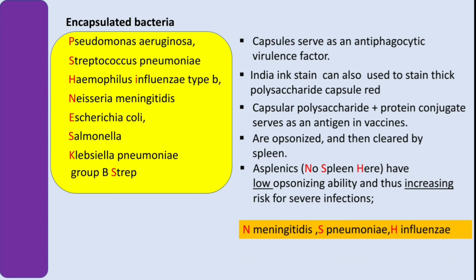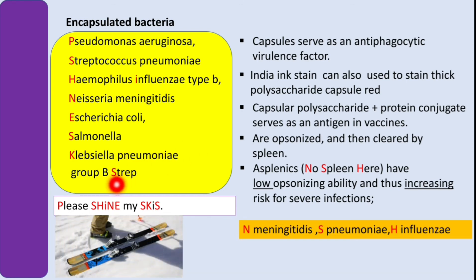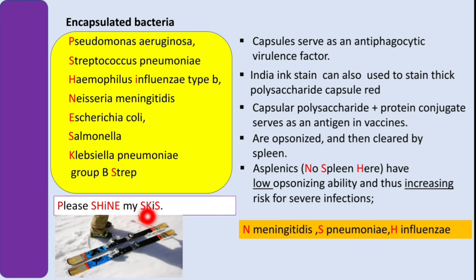The mnemonic 'Please shine my skis' helps you remember all the encapsulated bacteria: P for Pseudomonas aeruginosa, S for Streptococcus pneumoniae, H for Haemophilus influenzae, N for Neisseria meningitidis, E for E. coli, S for Salmonella, K for Klebsiella, and S for Group B Streptococcus.